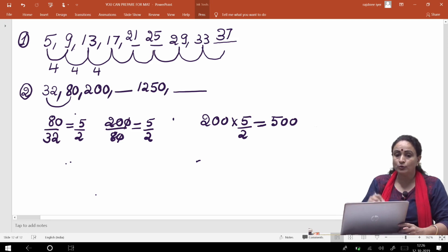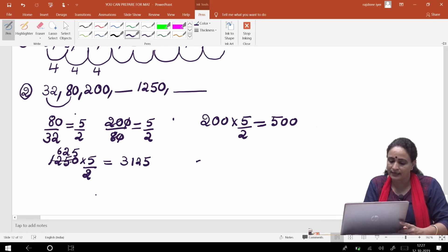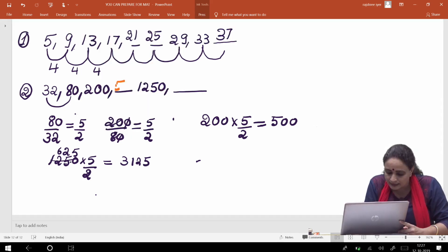So isi tarike se, jo next wala jo filling the blanks hai, usmein kya karna hoga aapko? You have to write 1250 again multiplied by 5 by 2. So this becomes 625 into 5. So that is equal to 3125. So the next number - toh yahan par mujhe kya likhna hoga bachcho, thoda dhyaan se dekhiye ga. The first one is 500 and the next dash it is equal to 3125.